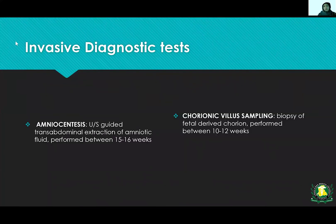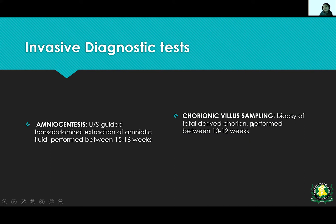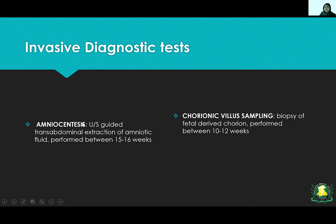The invasive diagnostic tests are amniocentesis and chorionic villus sampling (CVS). Amniocentesis is ultrasound-guided trans-abdominal extraction of amniotic fluid, performed between 15 to 16 weeks. CVS is a biopsy of fetal-derived chorion, performed between 10 to 12 weeks. Both are used to confirm positive screening results. Being invasive, they carry a chance of fetal loss.